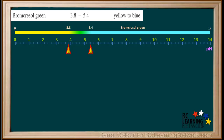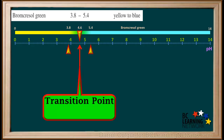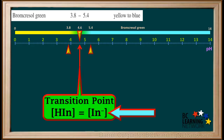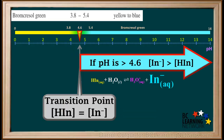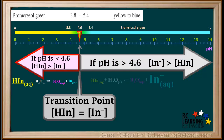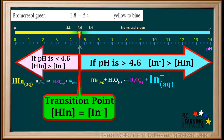Now we'll draw what we call a pH line for Bromocresol Green. We put markers on the pH graph at 3.8 and 5.4. We know that the pH at the transition point of Bromocresol Green is 4.6, so we'll label the transition point at a pH of 4.6. Remember, at the transition point, the concentration of the acid form HIn is equal to the concentration of the base form In⁻. For Bromocresol Green, if the pH is anywhere above the transition point 4.6, the equilibrium favors the base form In⁻, and the concentration of In⁻ is greater than that of HIn. And if the pH is anywhere lower than the transition point 4.6, the equilibrium favors the acid form, and the concentration of HIn is greater than that of In⁻. You should be able to draw a similar diagram for any indicator on the table, as every indicator has its own unique transition point.